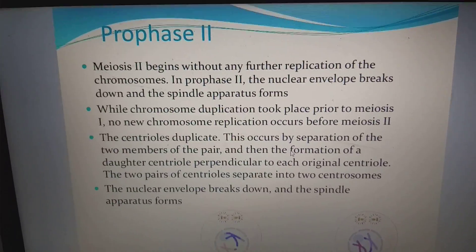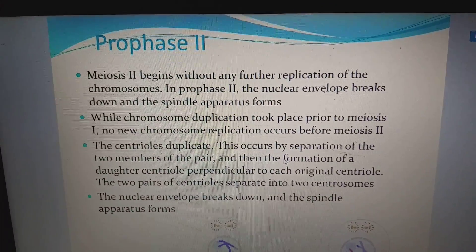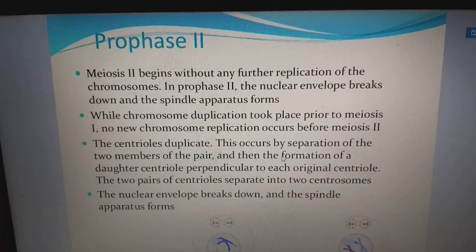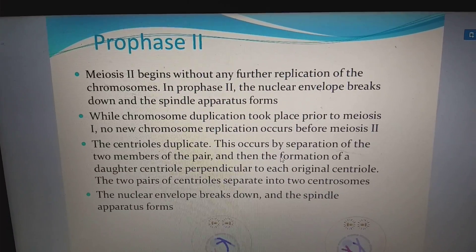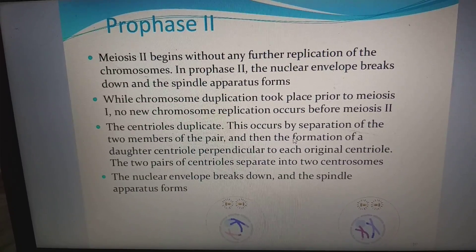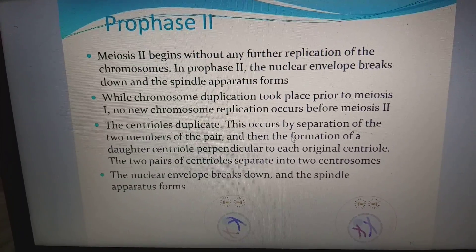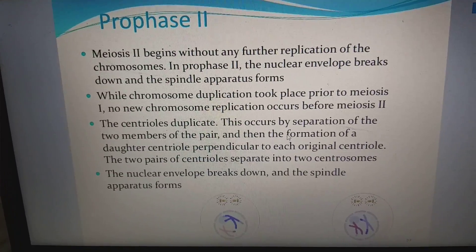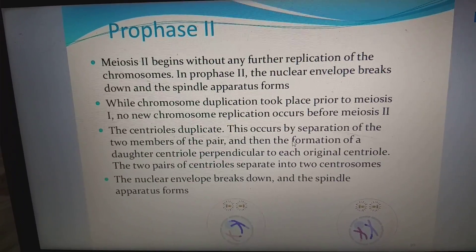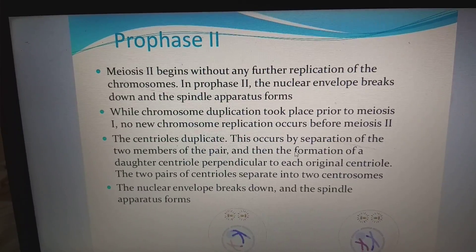Meiosis II begins without any further replication of chromosomes. In prophase II, the nuclear envelope breaks down and the spindle apparatus forms. No new chromosomal replication occurs before meiosis II. The centrioles duplicate by separation of the two members of the pair, then formation of a daughter centriole perpendicular to the original centriole, and the two pairs of centrioles separate into two centrosomes. In prophase II, condensation of chromatin into chromosomes occurs along with dissolution of the nuclear membrane and nucleolus.